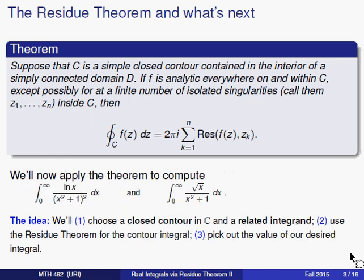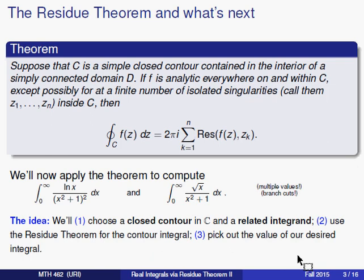We're going to take a look at a couple of other types of integrals where this process will be useful. Specifically, we're going to look at two examples. In this video, we're going to look at the integral from 0 to infinity of the logarithm of x divided by (x² + 1)². In the next video, we're going to take a look at the integral from 0 to infinity of the square root of x over x² + 1. What makes these functions a little bit different is that they are multiple-valued functions when you think of them in their complex forms.